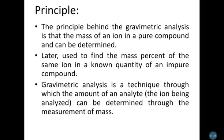In gravimetric analysis, the mass of iron in a pure compound can be determined. Once the pure compound's iron content is known, you can find the percentage of mass of the same ions present in the whole impure compound. Gravimetric analysis is also useful for identification, determination, and measurement of the amount of analyte.